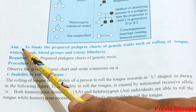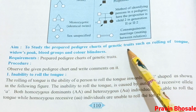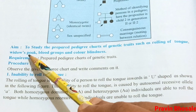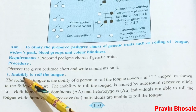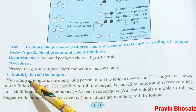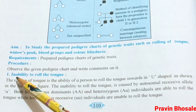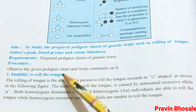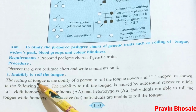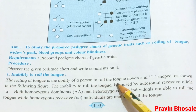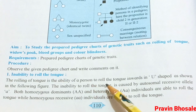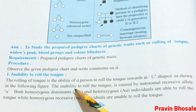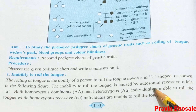Now let's start to study the pedigree chart for genetic traits such as rolling of tongue, widow's peak, blood group, and color blindness. The first one is inability to roll the tongue — please note, it is inability, not ability. Rolling of tongue is the ability of a person to roll the tongue inwards in a U shape. Inability to roll the tongue is caused by an autosomal recessive allele, that is small a.